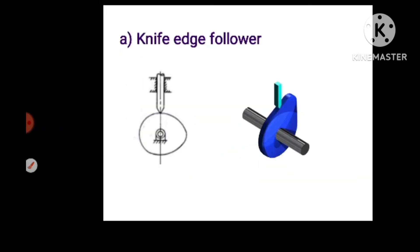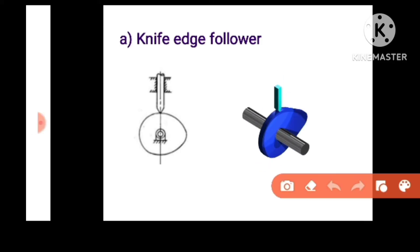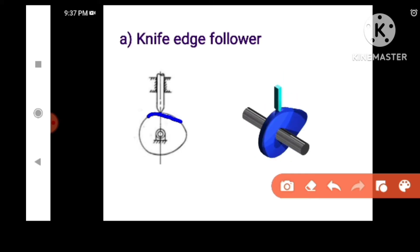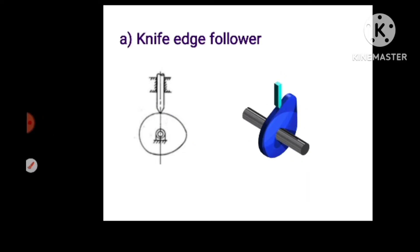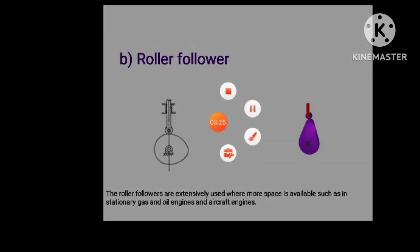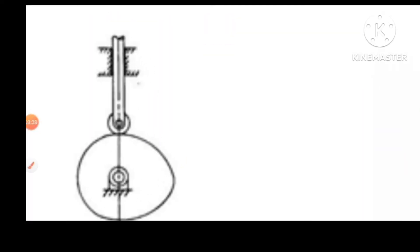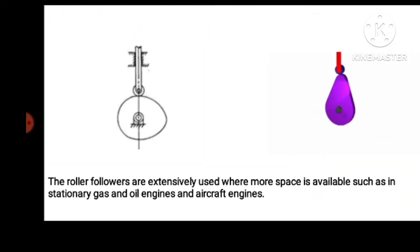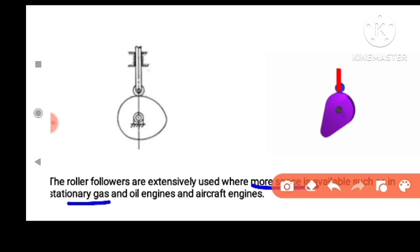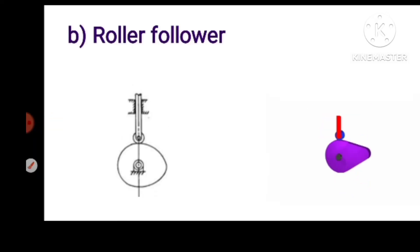Let's look at the diagram. Knife edge follower — this is the knife edge follower. They use a relevant connector. Stairs and gas and oil engines use the roller follower.